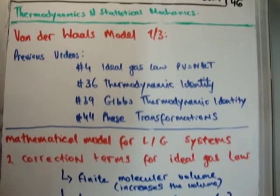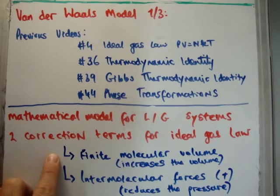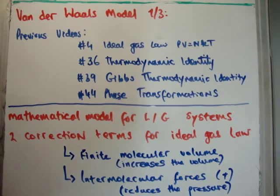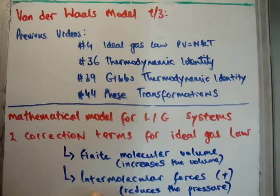The two correction terms are as follows. The first one accounts for the fact that there is in fact a finite molecular volume. The second one accounts for the fact that there are attractive intermolecular forces. So how does that affect the ideal gas law? Because there is a finite molecular volume, we have to increase the volume term in our ideal gas law. And because there are attractive intermolecular forces, we need to reduce the pressure term in the ideal gas law.